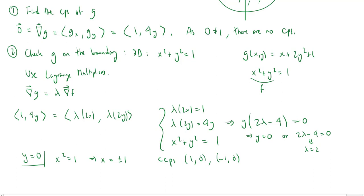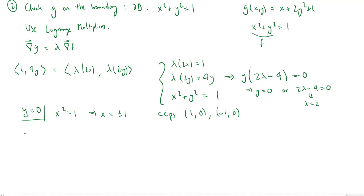What if we're in the other situation where lambda is equal to 2? If lambda is equal to 2, then we have this top equation here, which will tell us that 2 times 2x, so 4x is equal to 1, which would imply that x is equal to 1 fourth. Now I can plug that into the third equation. So when x is a fourth, then if I square that, I'll get a sixteenth. And so I'll have y squared is 1 minus 1 sixteenth, or 15 sixteenths. And so y will be plus or minus root 15 over 4. And so I get two more constrained critical points. x is 1 fourth, and y is either going to be root 15 over 4, or y will be negative root 15 over 4.